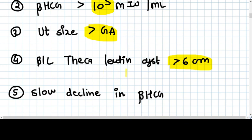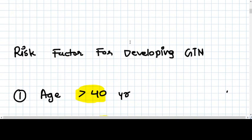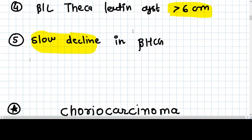Slow decline in beta-HCG when you've done suction evacuation or hysterectomy, or maybe you have given methotrexate cycles. If the decline of beta-HCG is not what we expected, in all these cases we start doubting that it can be a GTN.